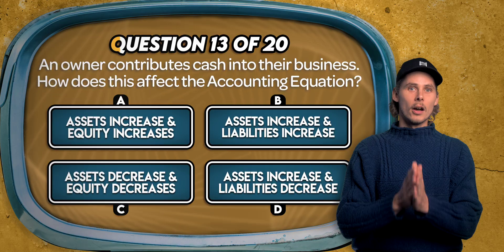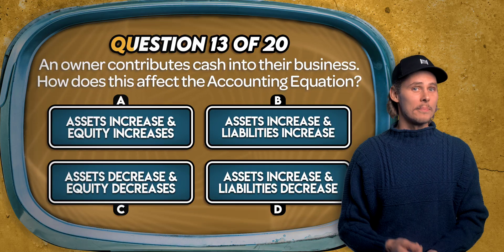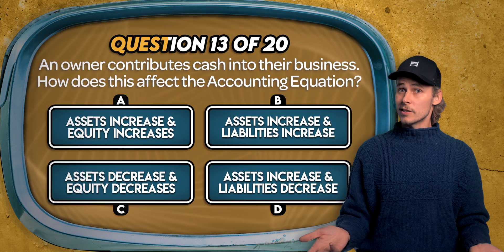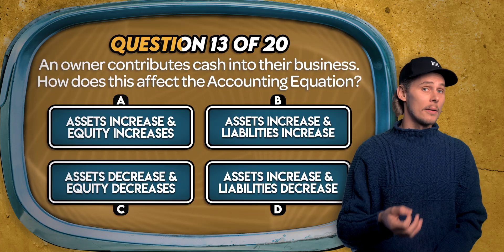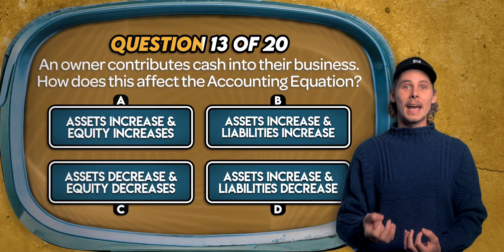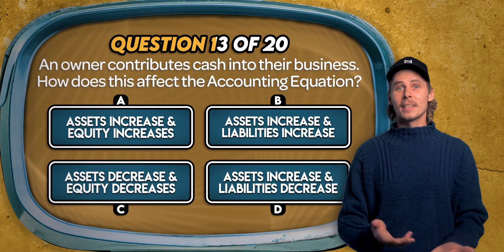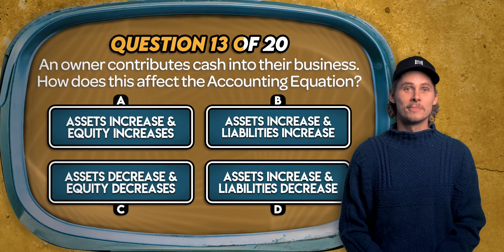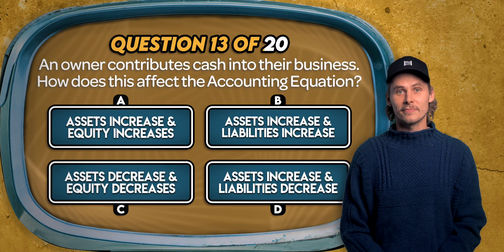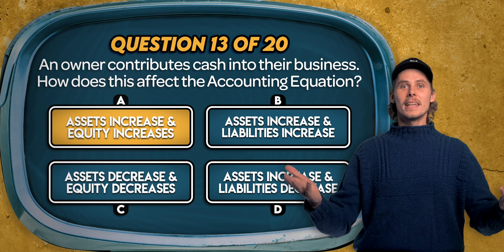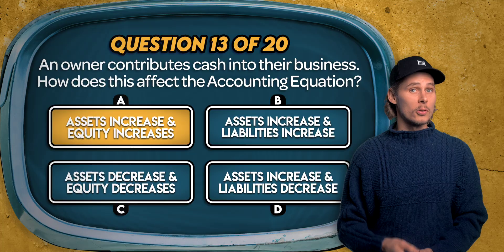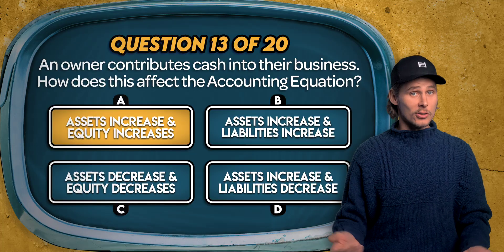Question 13. An owner contributes cash into their business. How does this affect the accounting equation? Assets increase and equity increases? Assets increase and liabilities increase? Assets decrease and equity decreases? Or assets increase and liabilities decrease? The answer is A. The business's cash goes up so its assets increase, and its equity increases because the owner's claim on the business has grown.